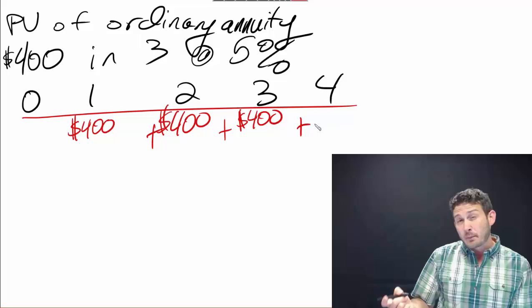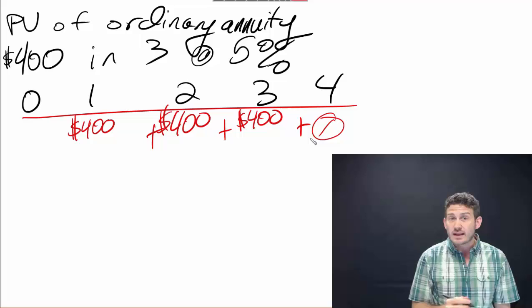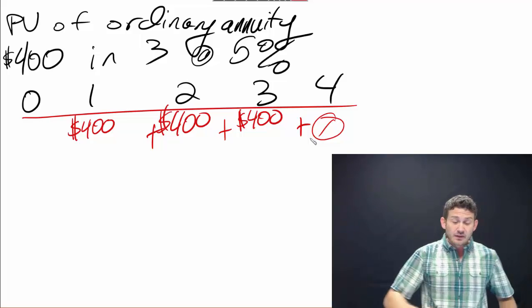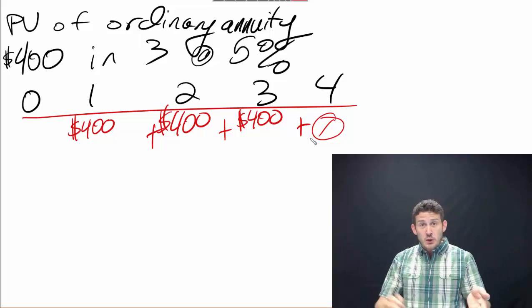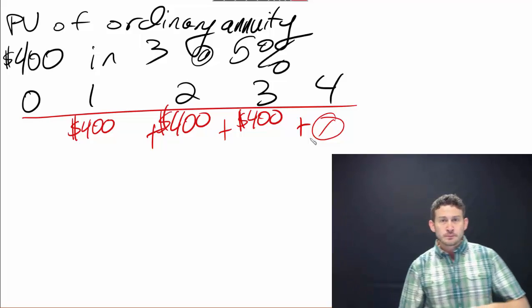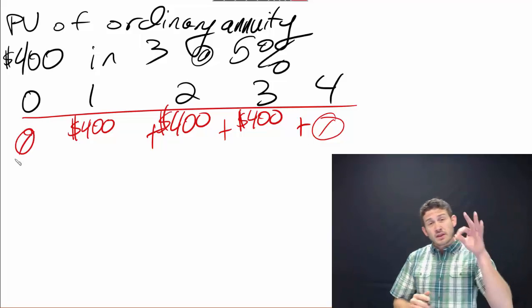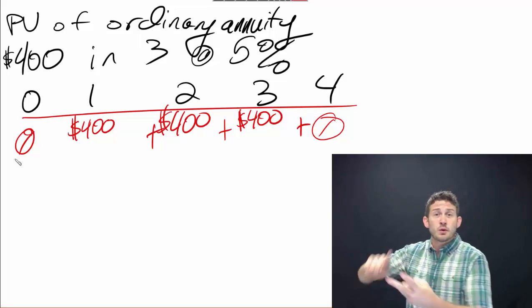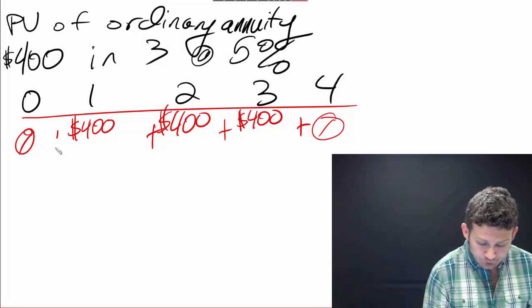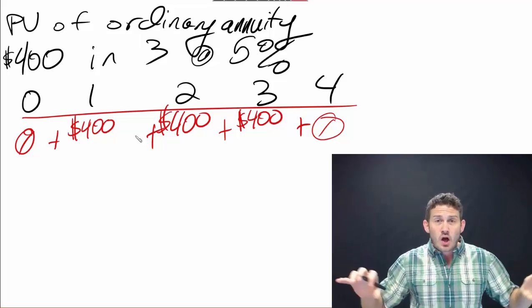What do we have coming in year four? Nothing. There's a big goose egg out here in year four. Why isn't there anything coming in year four? Because it's a three-year annuity. What do we have coming right now? Nothing. Once again, we have a three-year annuity with time coming in year one, year two, and year three.